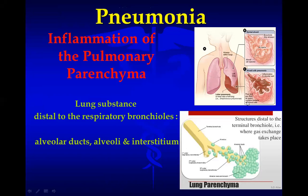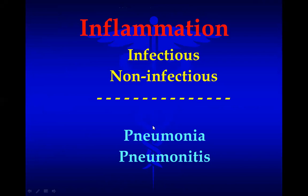We will start by defining pneumonia, which is an inflammation of the pulmonary parenchyma. The pulmonary parenchyma is the lung substance distal to the respiratory bronchioles, as you can see from this picture. This includes the alveolar ducts, the alveoli, and the interstitium between the alveoli.